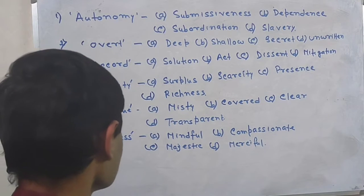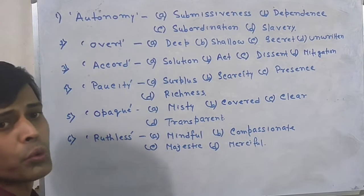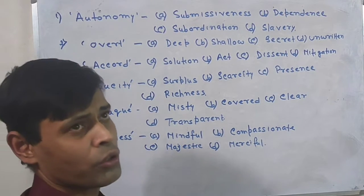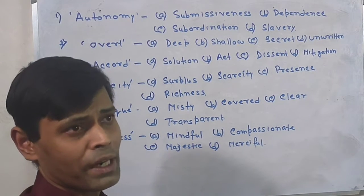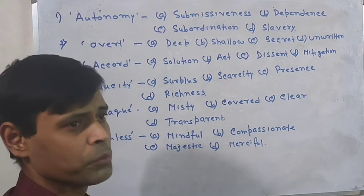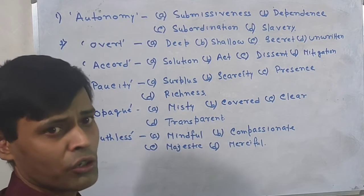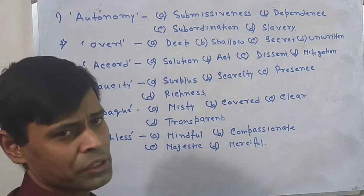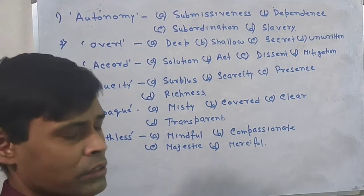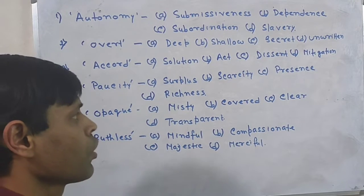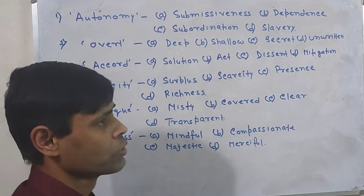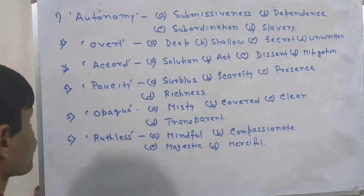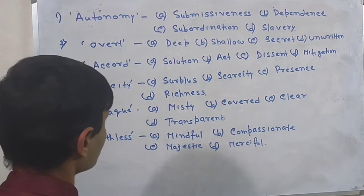Autonomy means that it runs on its own. Suppose an autonomous government, an autonomous body, an autonomous school, an autonomous institution, an autonomous organization — that means the organization runs on its own. So this is called autonomous or autonomy. Autonomy is a noun form.